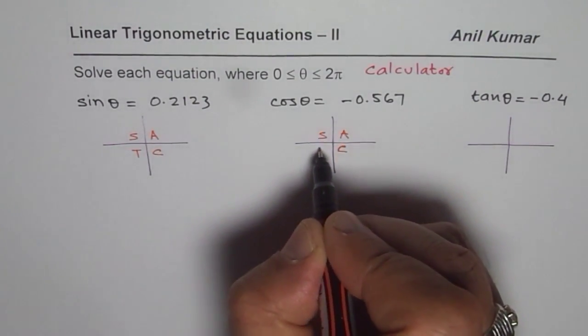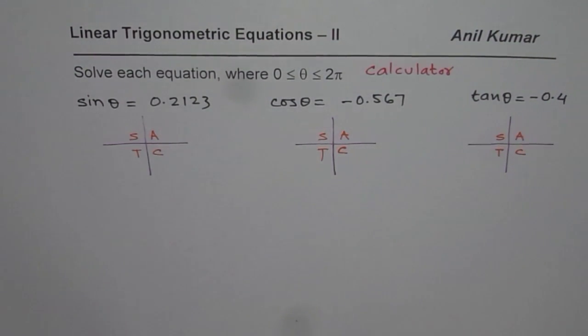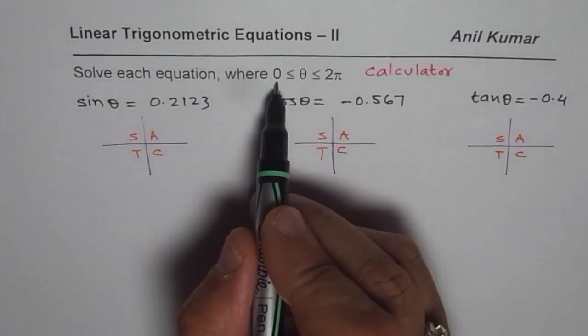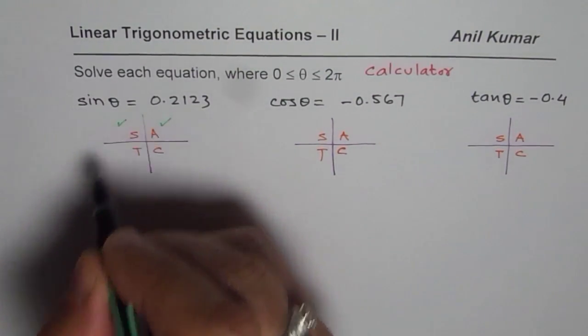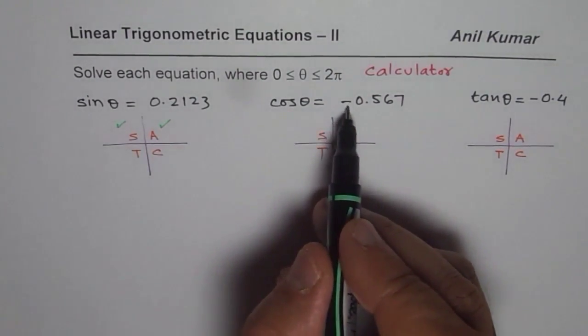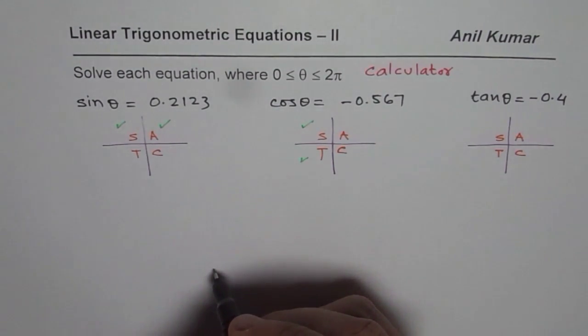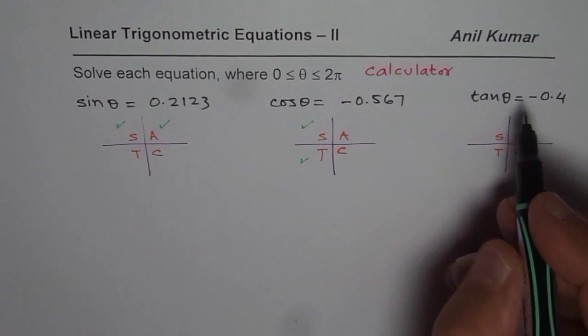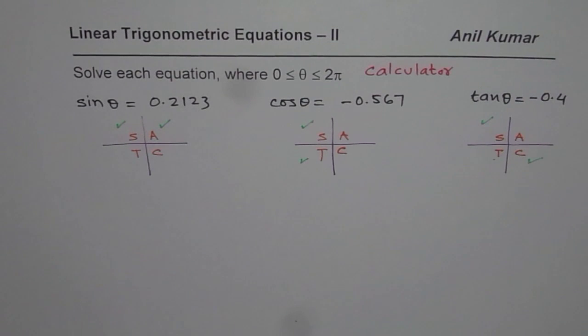We call it CAST rules: Cosine, All, Sine, and Tan. Some of us refer this to All Students Take Calculus. When we say that sin θ is positive, then we mean that in this interval 0 to 2π, we are expecting two solutions. Since sin θ is positive in quadrant 1 and in quadrant 2. Cos θ is negative means two solutions again, but the solutions will be in quadrant 2 and in quadrant 3. For tan to be negative, you should be in quadrant 2 and 4.